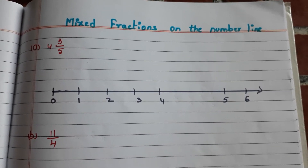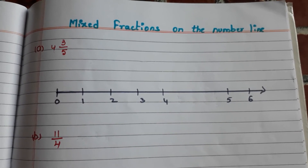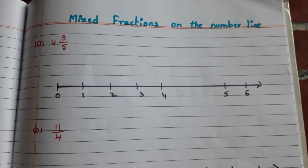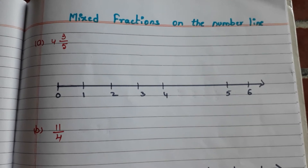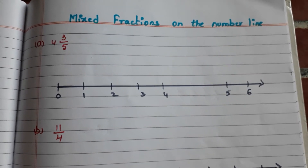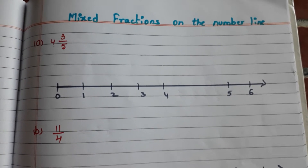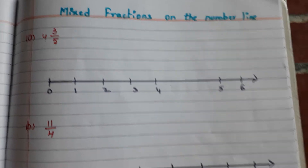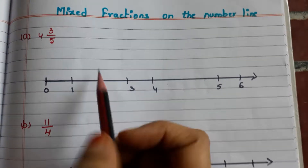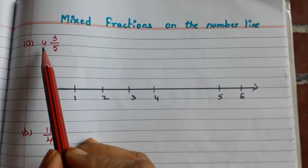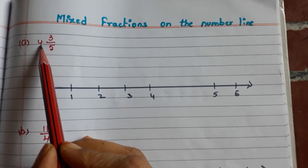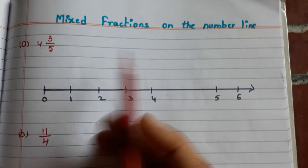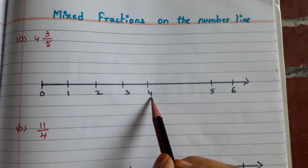Hi all, welcome to my channel. In this video we'll have a look at how to place mixed fractions on the number line. Here we have the mixed fraction 4 3/5. First we have to place the whole number on the number line — the whole number here is 4, and here is 4 on the number line.